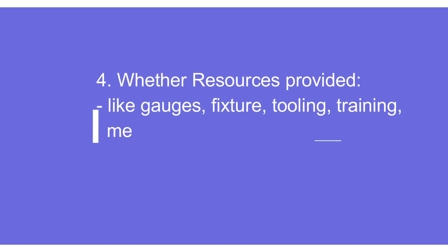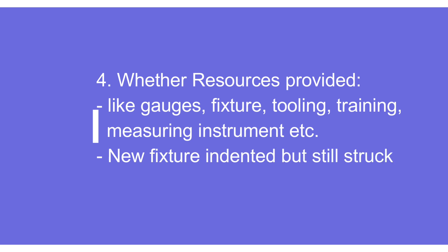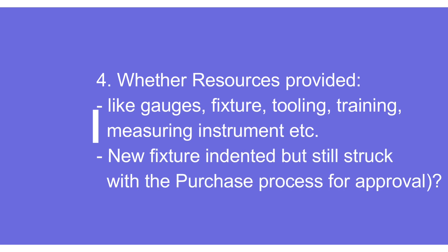Point number four is about what kind of resources the organization has provided to the concerned people when the action is being taken. Resources can include making jigs, fixtures, tooling, providing training, or getting new measuring instruments. For example, in our case a new fixture has been indented but it is stuck with the purchase approval process, and unless approved it will not move further. It is important to look into all those aspects.